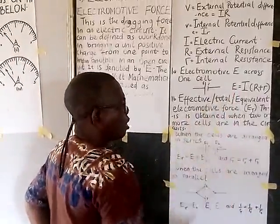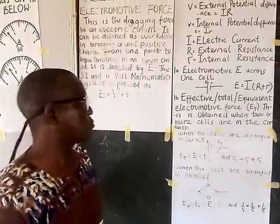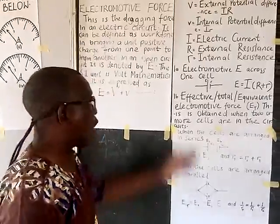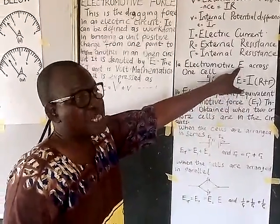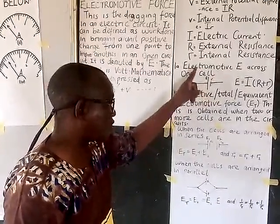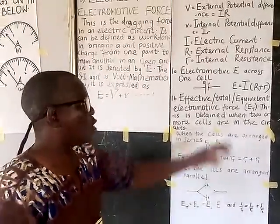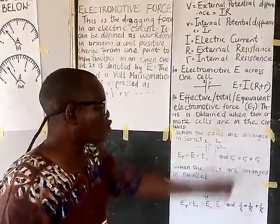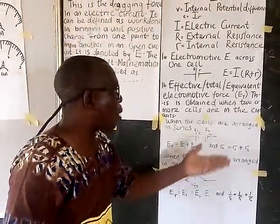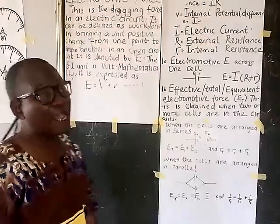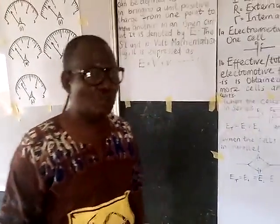When we talk of effective — which can also be replaced with total or equivalent — electromotive force, we no longer use ordinary E. When you have two or three cells, we use ET to denote effective electromotive force. This is obtained when two or more cells are connected in the circuit.